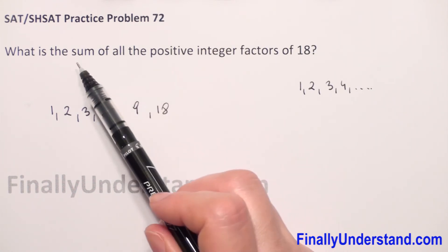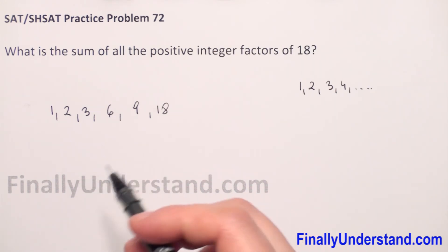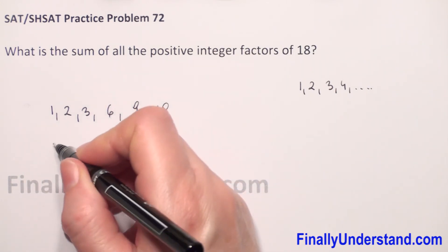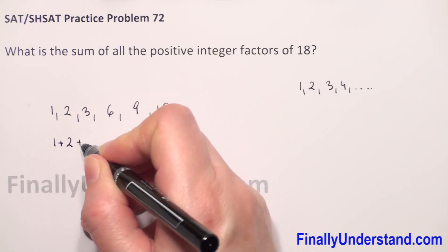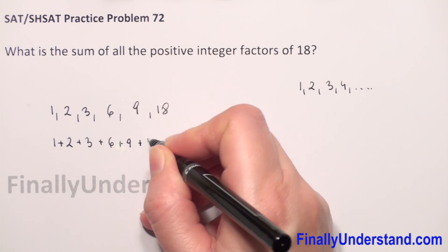What now we have to do? We have to find the sum of these positive factors. So we have to add these 6 numbers. So we have 1 plus 2 plus 3 plus 6 plus 9 plus 18.